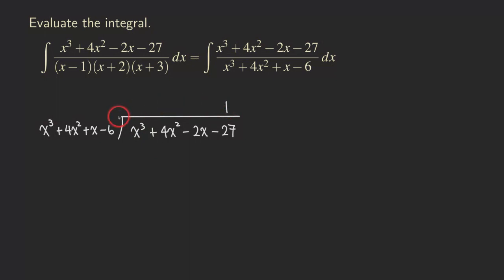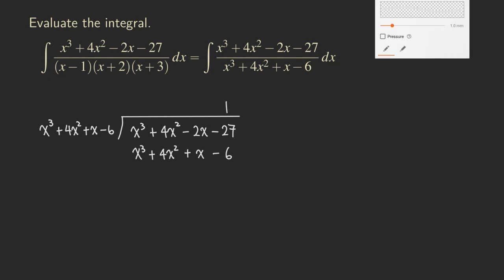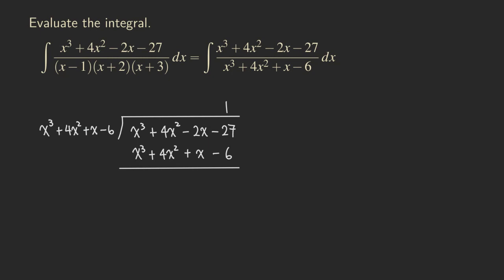So we'll have a 1 here. 1 times this whole polynomial — you're going to put that here. Because we're multiplying by 1, we just copy the divisor: x cubed plus 4x squared plus x minus 6. Now draw a line, and we are doing subtraction. x cubed minus x cubed is zero. 4x squared minus 4x squared also cancel each other out, so we put nothing there — you can put two dots to indicate the cancellation.